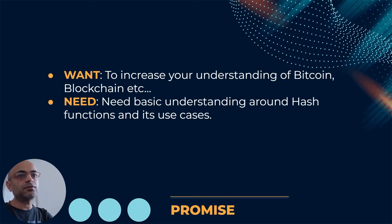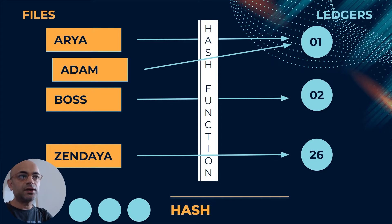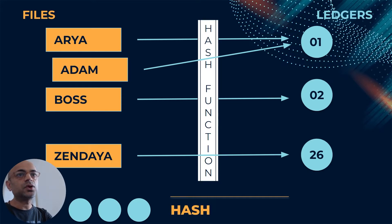Let's say you have some physical files on people like Aria, Adam, Boss, and Zendaya, and you have some ledgers numbered 0-1, 0-2, and 26. You want to keep Aria and Adam in ledger 01, Boss in 02, and Zendaya in 26. You arrange these ledgers by picking the first alphabet and mapping A to 01, B to 02, and similarly Z to 26. This is a simple schema of hashing — mapping files to ledgers — and this is a simple example of a hash function.